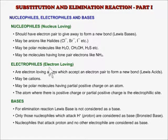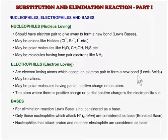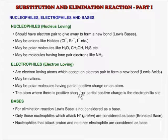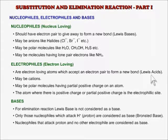Electrophiles are electron-loving atoms which accept a pair of electrons to form a new bond. They are part of a molecule and may have a formal positive charge on that atom — that is, it may be a cation — or it may be a polar molecule having a partial positive charge on an atom. The atom on which there is a positive or partial positive charge is called the electrophilic site of the molecule. Electrophiles are therefore Lewis acids.